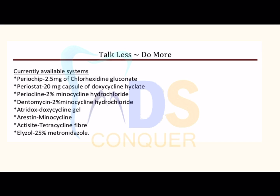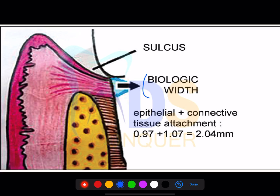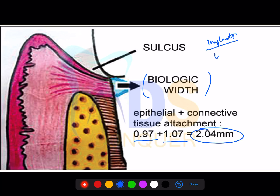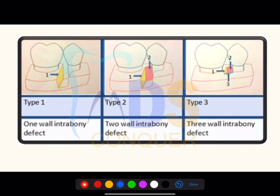Biological width is a combination of epithelial attachment and connective tissue — that is 0.97 plus 1.07, totaling 2.04 mm. The same question can be asked about biological width around the implant. Biological width around the implant is 4 to 4.5 millimeters according to Carranza. This was a question given in the 2020 NEET exam.